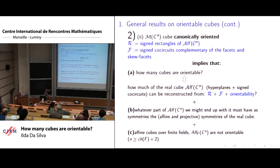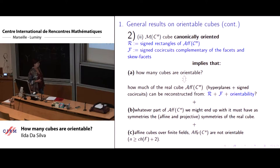Actually, we know also whatever part we might end up with, it must have the symmetries of the affine and projective, the same as the real cube, because those families R and F have the same symmetries, exact group of symmetries.